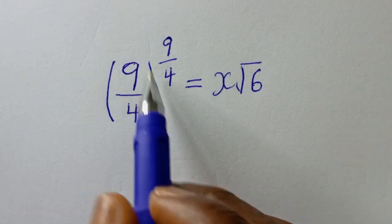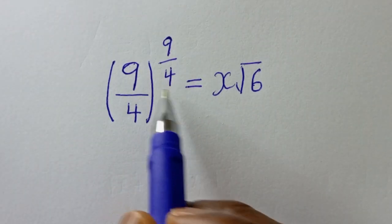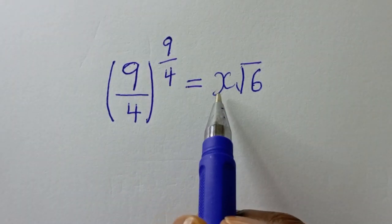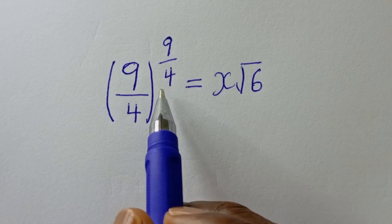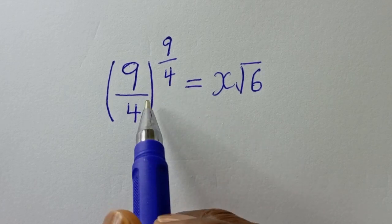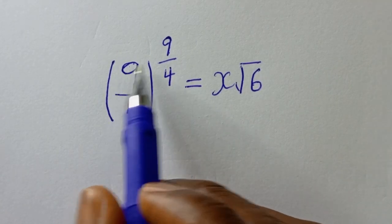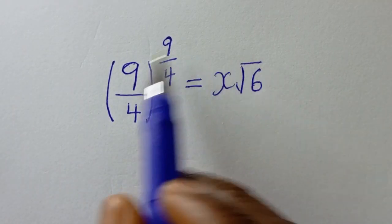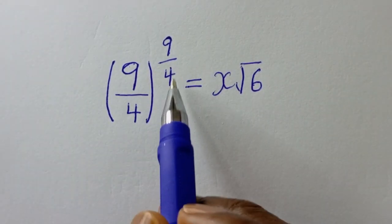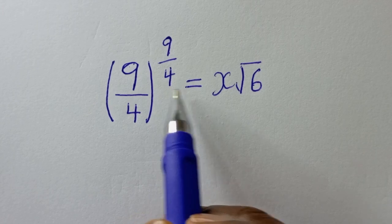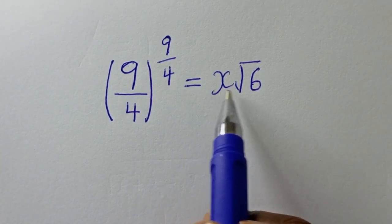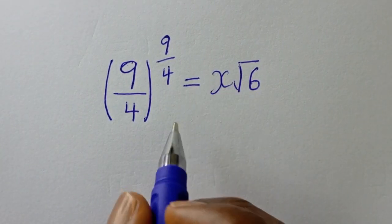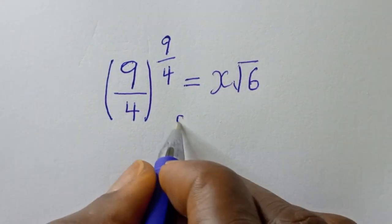9 over 4 to the power of 9 over 4 is equal to x square root of 6. Hi everyone, welcome to my class. In this class, we quickly want to find the value of x from this given equation. But before we proceed, please don't forget to like, share, comment and subscribe.